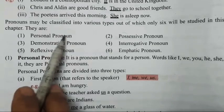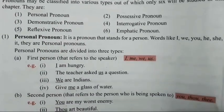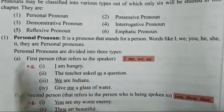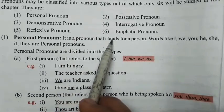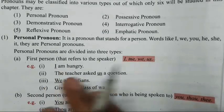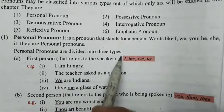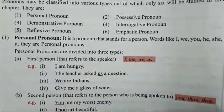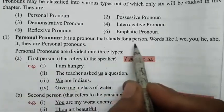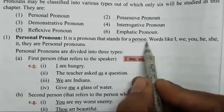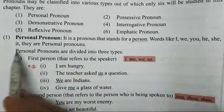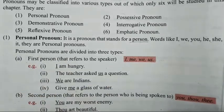First is personal pronoun. It is a pronoun that stands for a person. Matlab kisi cheez ko nahi represent karte hai — woh kisi person ko represent karte hai. Personal pronoun — naam se hi pata chal jaata hai, it represents a person. Words like I, we, you, he, she, it — these are personal pronouns.